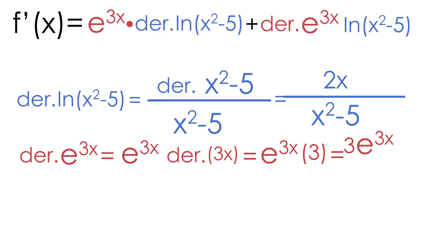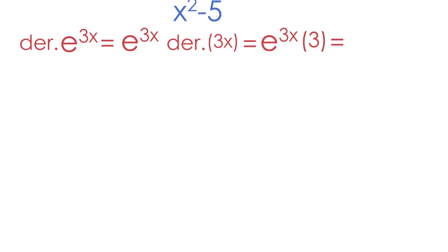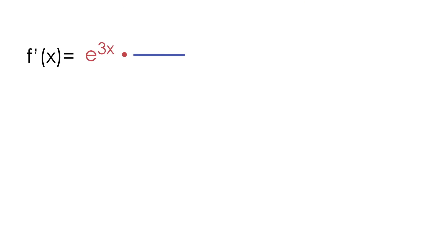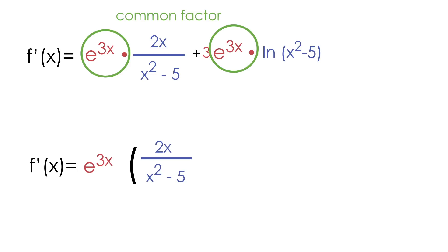Now we have taken the derivative of our natural log and the derivative of our E. The derivative of our original function now looks like E to the 3x multiplied by 2x over x squared minus 5, plus 3E to the 3x multiplied by the natural log of x squared minus 5. Notice how these two terms have a common factor of E to the 3x. So if we pull out that E to the 3x as a common factor, on the inside of the parentheses we're left with 2x over x squared minus 5 for our first term, and 3 times the natural log of x squared minus 5 for our second term.